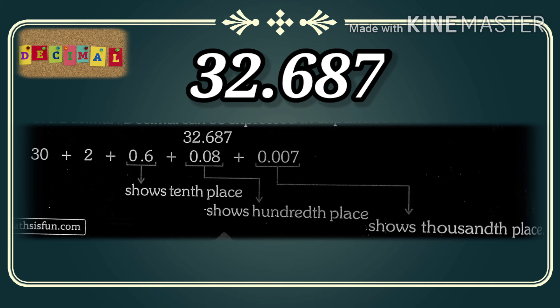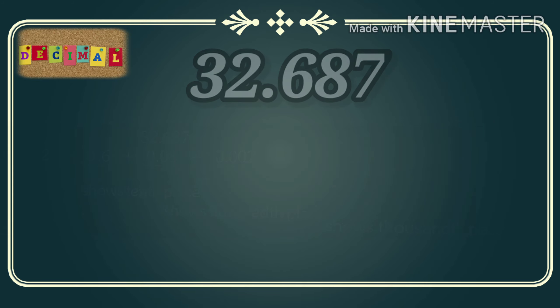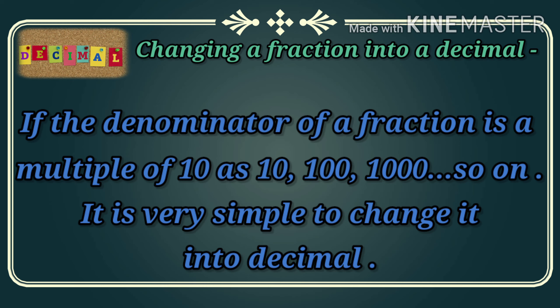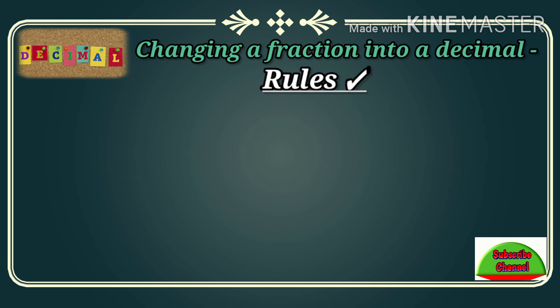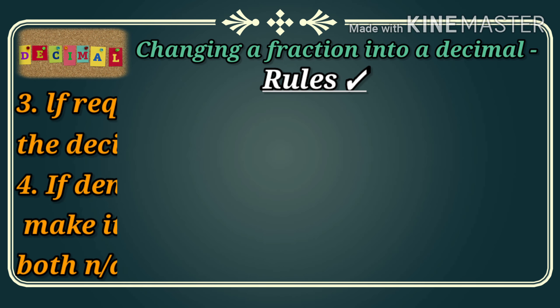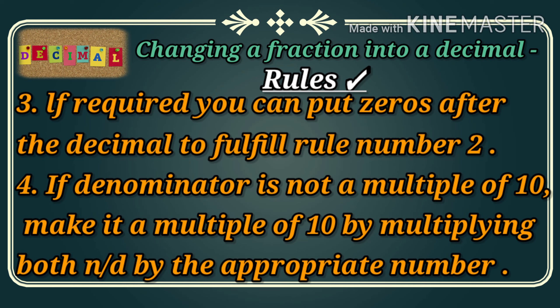Now, changing a fraction into a decimal. If the denominator of a fraction is a multiple of 10 — such as 10, 100, 1000, and so on — it is very simple to change it into a decimal. The rules are: first, observe the number of zeros in the denominator. Second, put a decimal in the numerator, leaving as many digits after the decimal as there are zeros in the denominator. Third, if required, put zeros after the decimal to fulfill rule number 2.